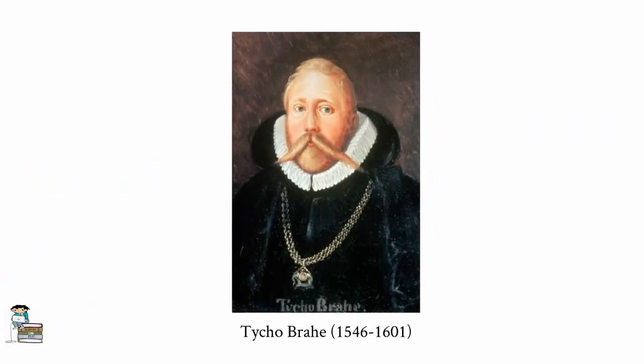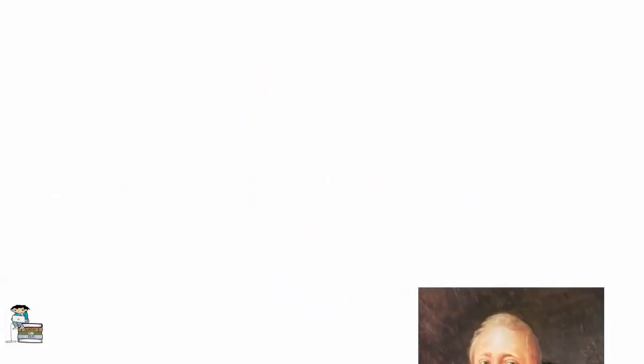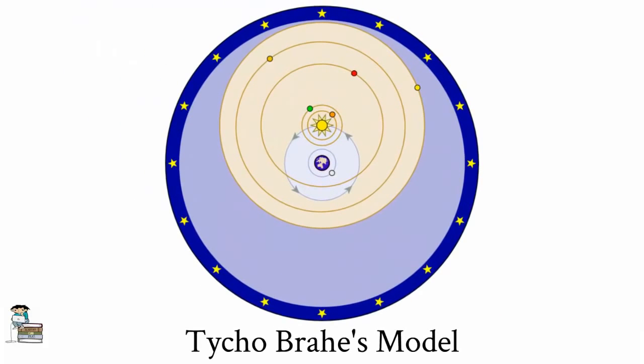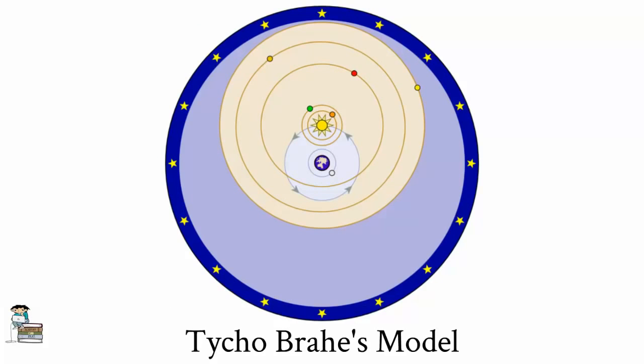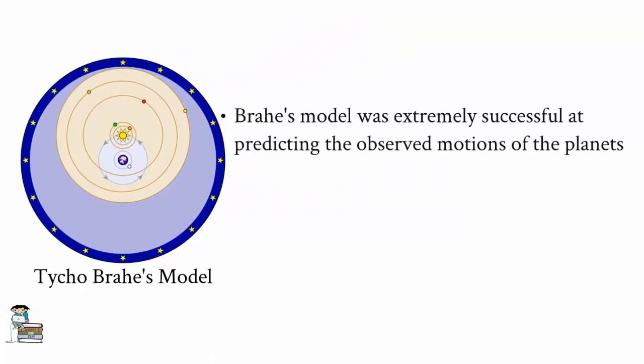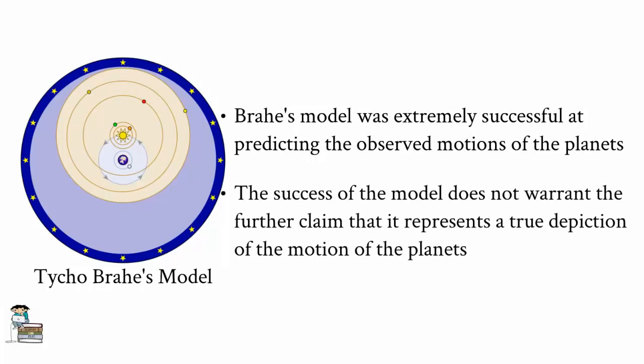Tycho Brahe, a 16th century astronomer, developed a model of the solar system in which the Sun and Moon orbited the Earth while the planets Mercury, Venus, Mars, Jupiter, and Saturn orbited the Sun. This model was extremely successful at predicting the observed motions of the planets. However, it obviously would not have been correct for one to use the success of this model to make the further claim that it was a true depiction of the solar system. For as we now know, the Sun does not orbit the Earth.